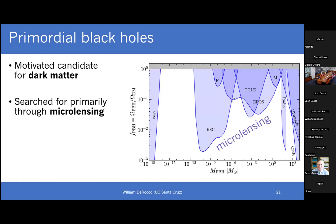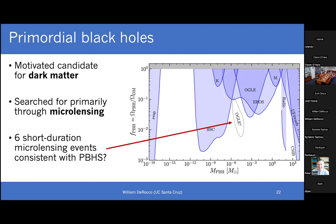PBHs are primarily searched for via microlensing. Looking at the constraints plot: at the very high mass end, you see constraints from cosmology; at the very low mass end, constraints from Hawking radiation — black holes would have evaporated away or be making high-energy particles we could detect. In the middle, that 10 orders of magnitude, the strongest observational limits all come from microlensing. As I said, microlensing has also seen something — these six short-duration events apparently consistent with primordial black holes.